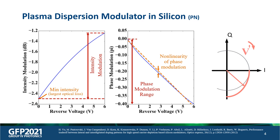However, it is hard to get such an ideal modulator in silicon photonics. For example, for a widely used PN junction-based phase modulator, when the reverse voltage changes, both the intensity and phase response of the modulator are changing — meaning the PN junction provides not only phase but also intensity modulation at the same time. In the IQ plane, the modulation curve will not follow a perfect circle but will have intensity drifts.